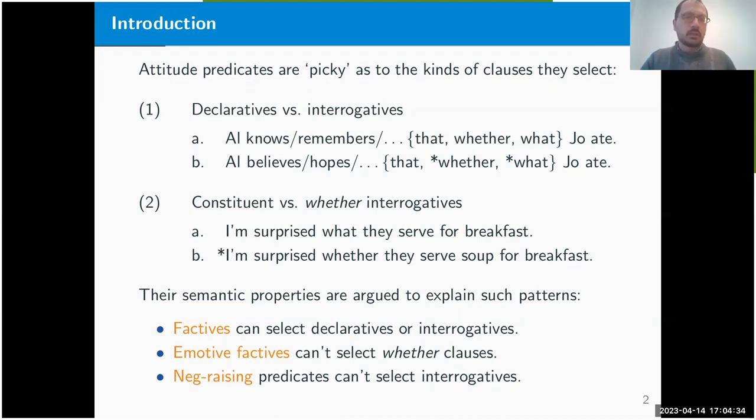One difference lies along the lines of declaratives versus interrogative selection. Verbs like know, remember, and forget are compatible with both declarative and interrogative complements, whereas verbs like believe, hope, and think are compatible with declaratives but incompatible with interrogative complements. Another kind of division concerns verbs like be